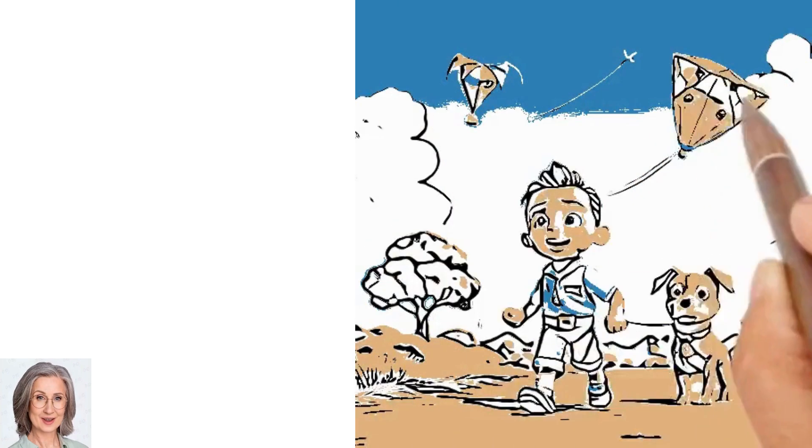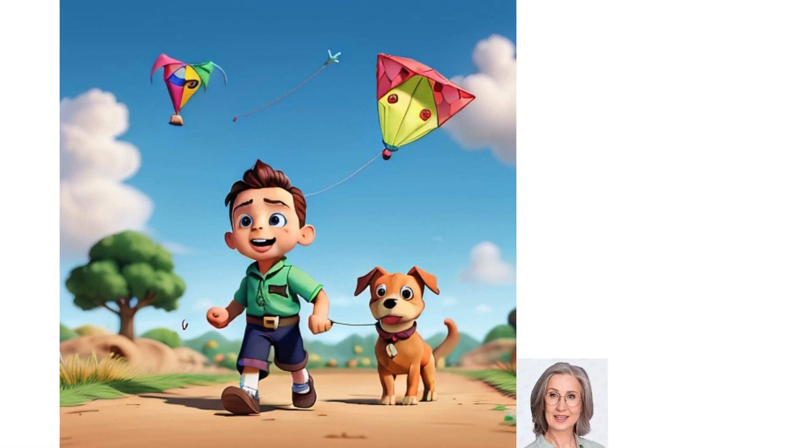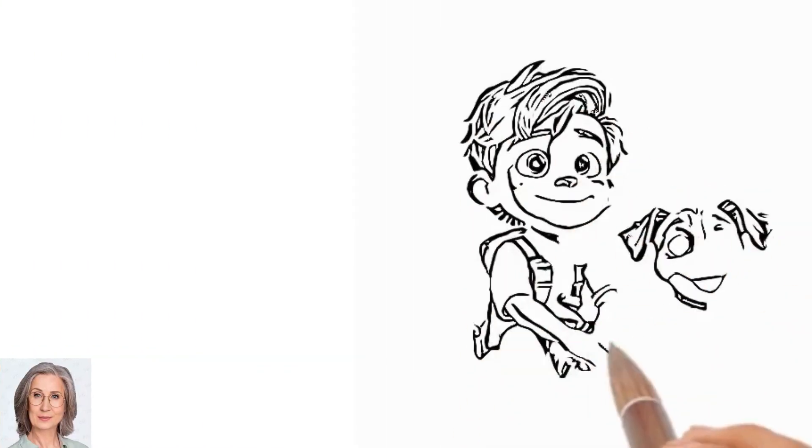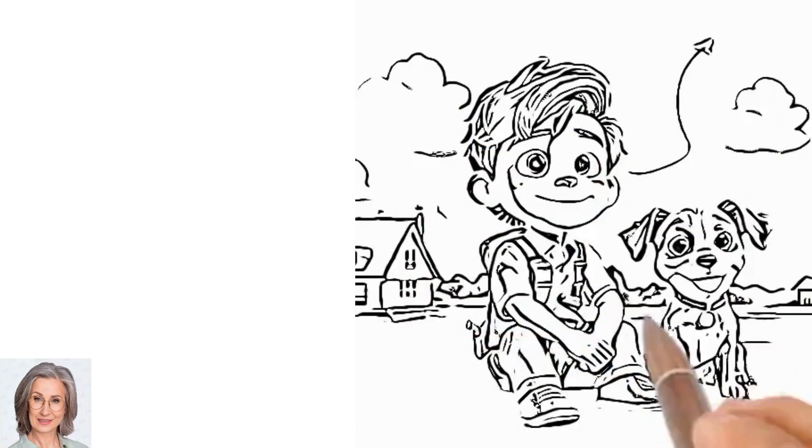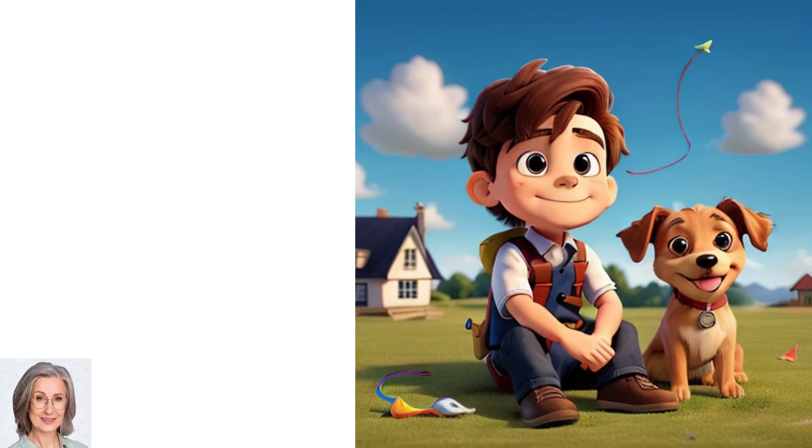Billy ran along with the kite, holding the string tightly, and soon he was flying too. He soared above the trees and the rooftops, feeling the same freedom he had felt in his dreams. He had finally achieved his dream, realizing that anything was possible if you set your mind to it.